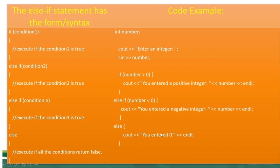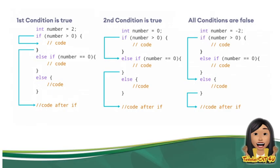Do not forget also that you are guided through the use of syntax. Ito yung syntax. Ito yung another example, which is showing if the first condition is true, second condition is true, and all conditions are turned to false.